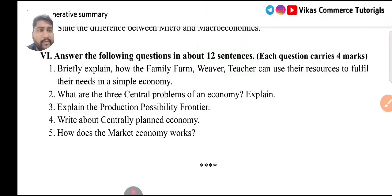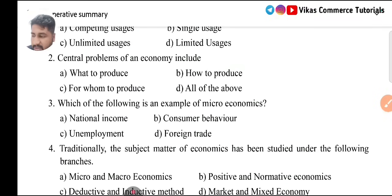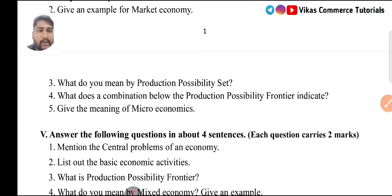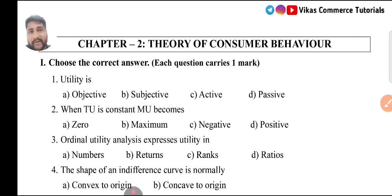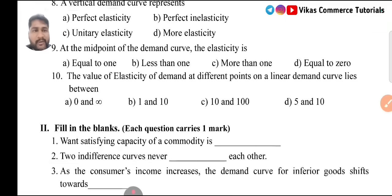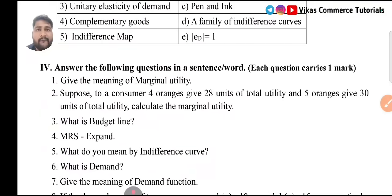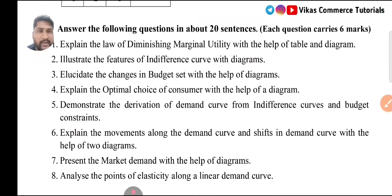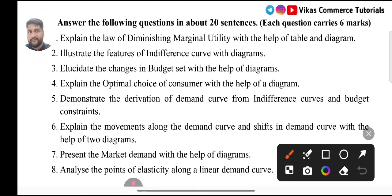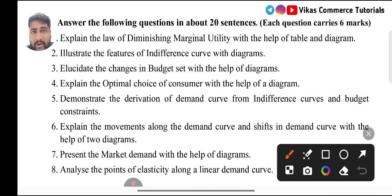There are two parts: Part 1 is Microeconomics and Part 2 is Macroeconomics. Coming to Microeconomics, the first chapter is Introduction — we do not have any 6 marks questions from there. Directly we will come to Chapter 2, Theory of Consumer Behavior. Theory of Consumer Behavior is one of the most important chapters, with 20 marks allotted to it. You may consider any of the three blueprints — 20 marks has been allotted to this chapter.